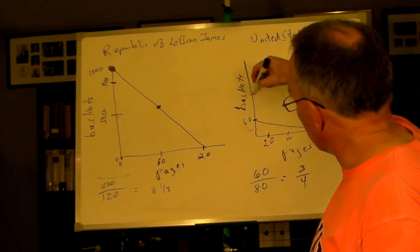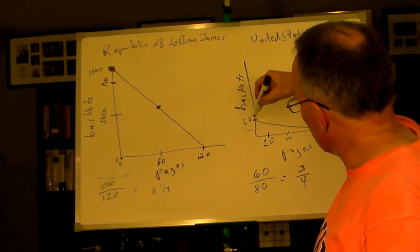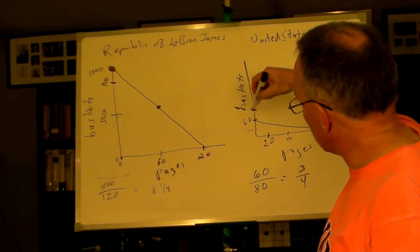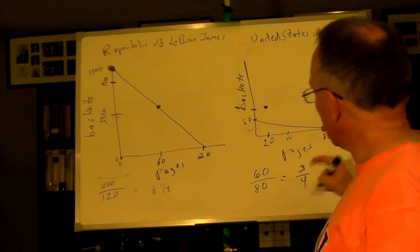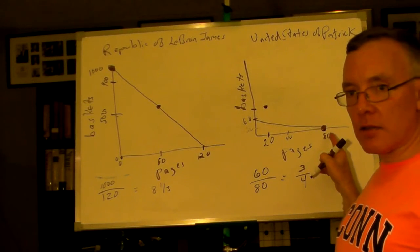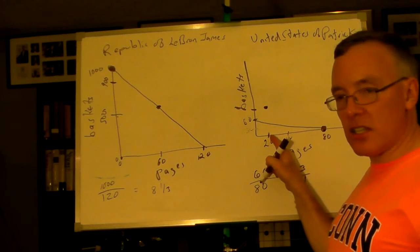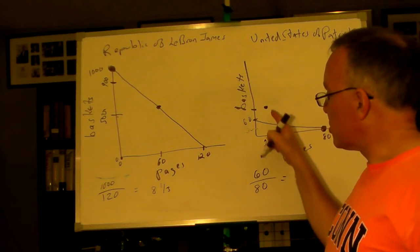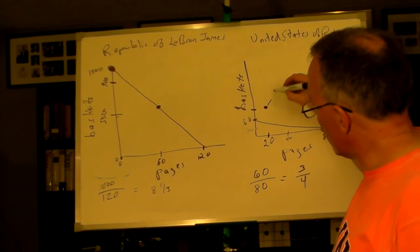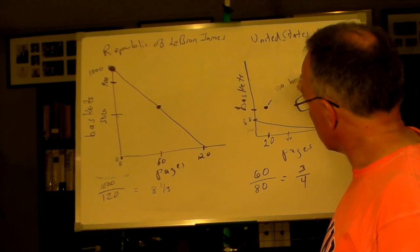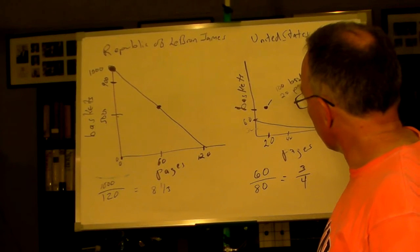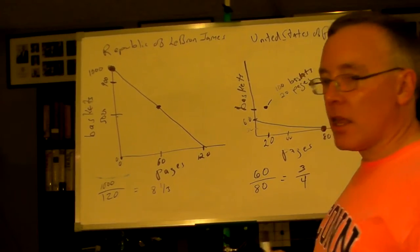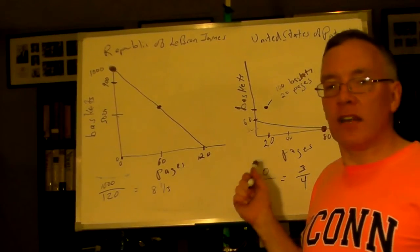He gives 60 of them to LeBron James in exchange for the 100 baskets. So, on Patrick's scale, that's way up here. Well, this is 60. So, 100 would be almost twice up here. So, let's say that's 100. So, Patrick is able to, he makes the 80, types the 80 pages, gives 60 of them to LeBron James in exchange for 100 baskets. So, he's able to consume 100 baskets and 20 pages,